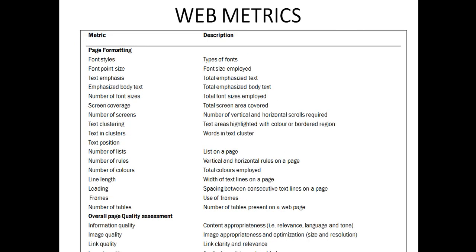Page formatting metrics depend on font, font size, and text. Additional metrics include number of lists, number of rules, colors, and length. Overall page quality is based on information quality, image quality, link quality, load quality, download speed, and layout quality.